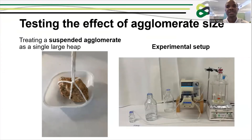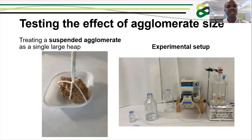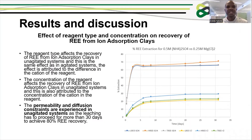Testing the effect of agglomerate size, we treat the suspended agglomerate as a single large heap. This does not have any solution flow channels — they have to be created because of flow resistance, so solution flows through the agglomerate. The experimental setup tests the effect of reagent type and concentration on the recovery of rare earth elements from iron adsorption clays, even in non-agglomerated systems.